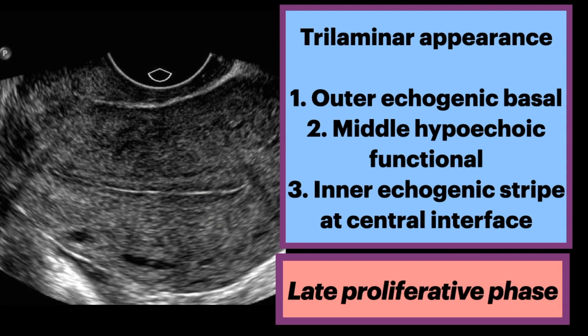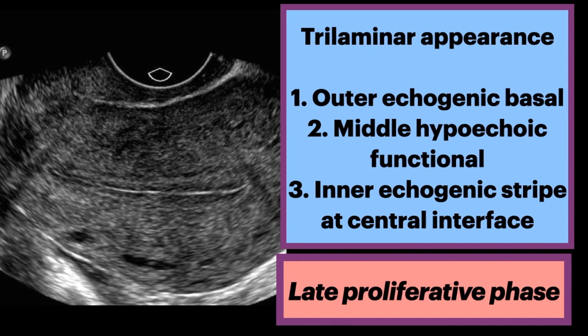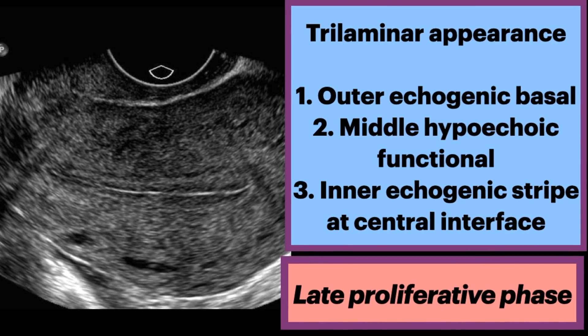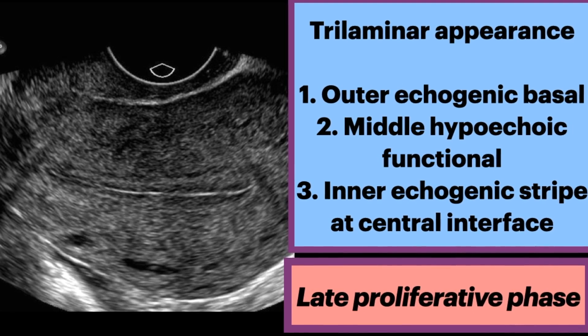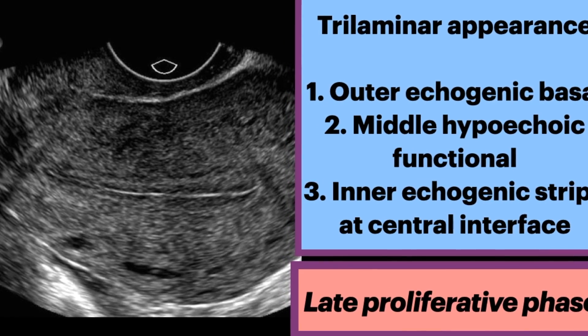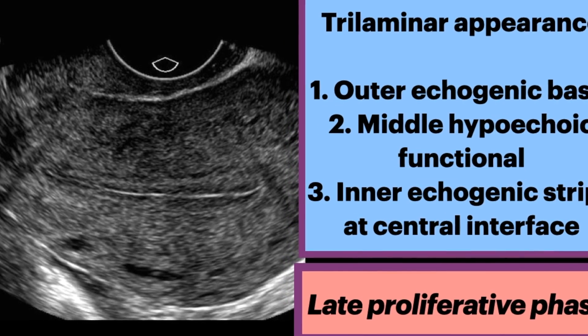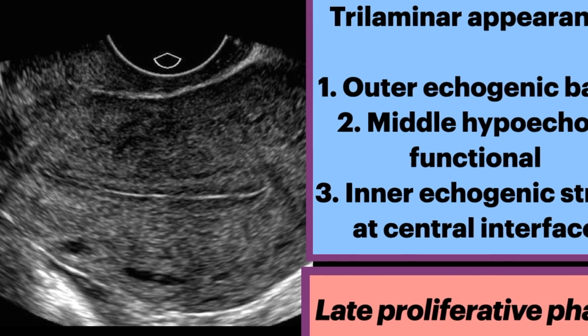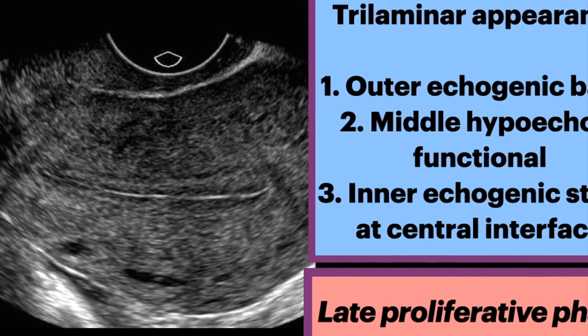In the late proliferative phase, there is a trilaminar appearance: the outer echogenic basal layer, middle hypoechoic functional layer, and an inner echogenic stripe at the central interface. Here is a typical trilaminar appearance of the endometrium in the proliferative phase. The uterus is incidentally retroverted, and during this stage, there is no corpus luteum.